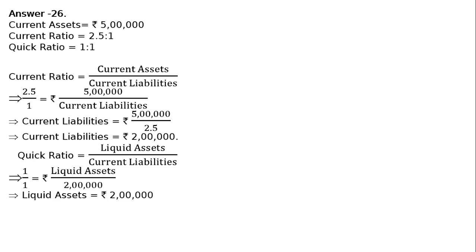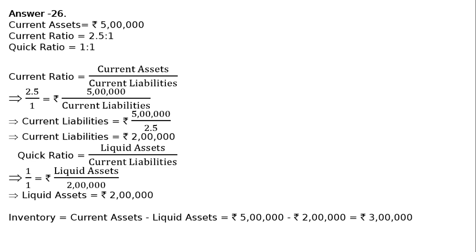Now we have current liabilities and liquid assets. Inventory = current assets minus liquid assets = Rs. 5 lakhs minus Rs. 2 lakhs = Rs. 3 lakhs. This is the value of inventory, liquid assets, and current liabilities.